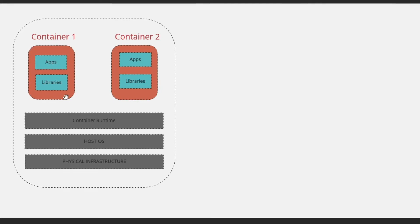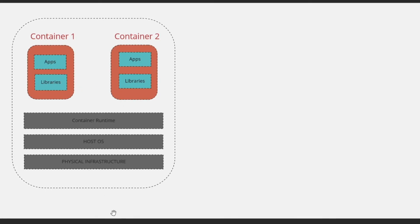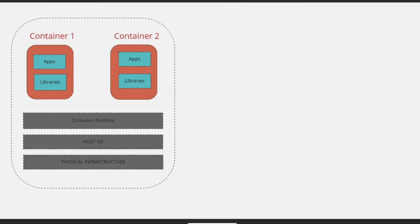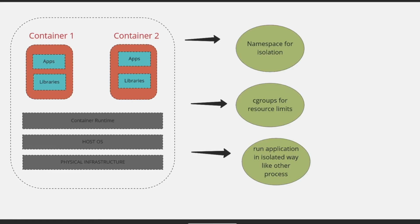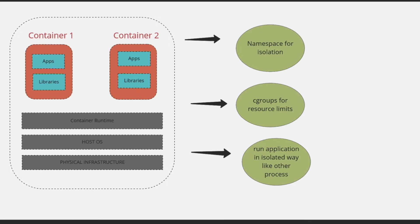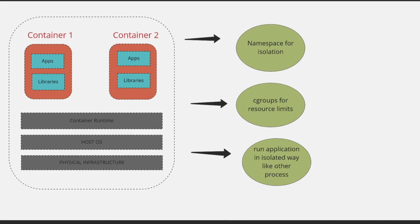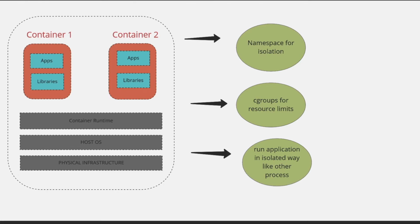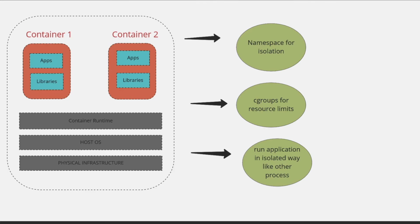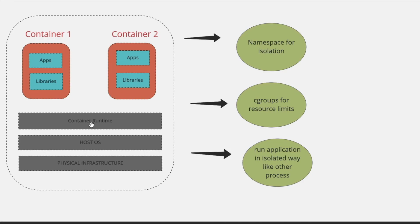What facilitates this isolation and resource utilization limits? That's where namespaces and cgroups come in. Namespaces provide isolation, and cgroups provide resource limitation. Because of this isolation and resource limitation, applications can run in an isolated way just like any other process. In Docker, for instance, every container appears as a process to the host operating system, with its own process ID — but it does not impact anything on the host OS.